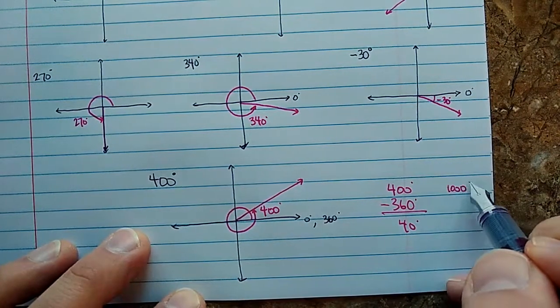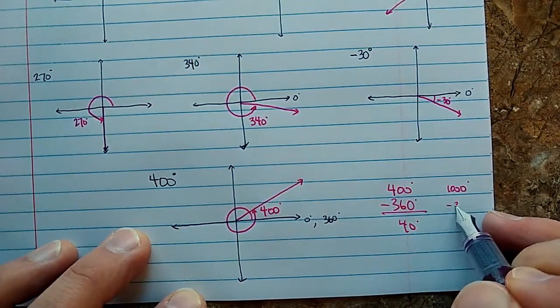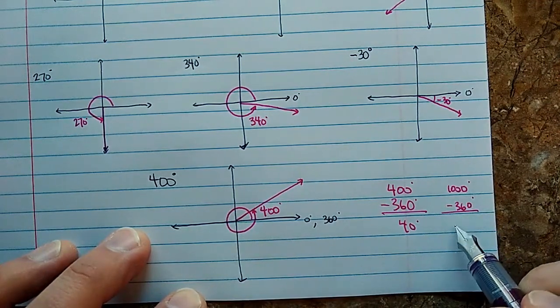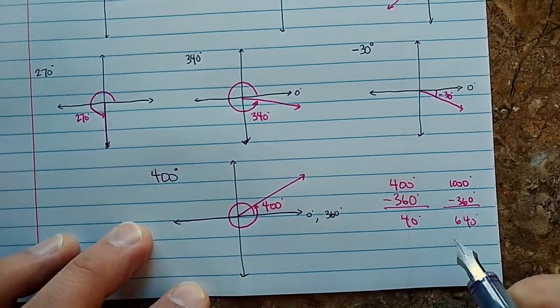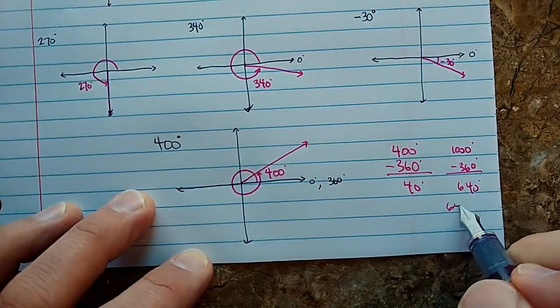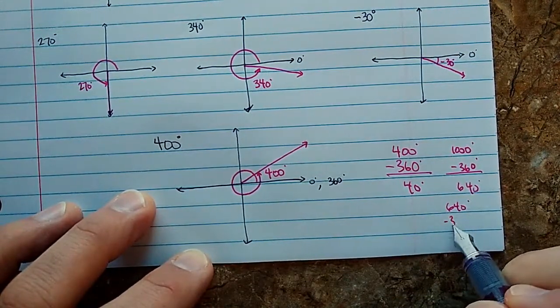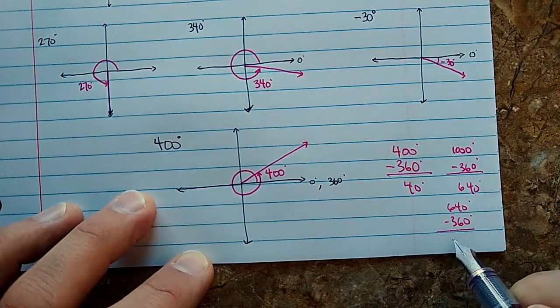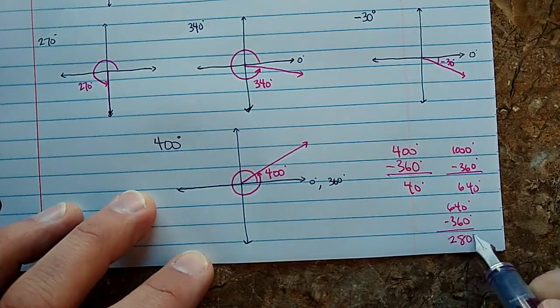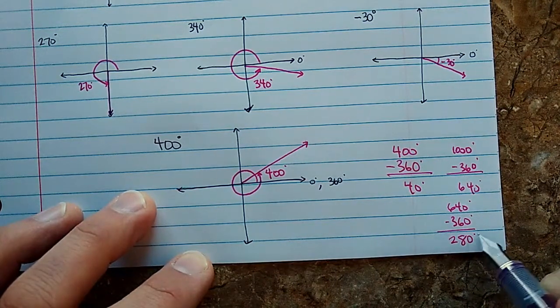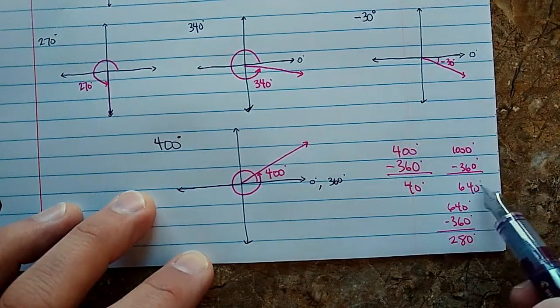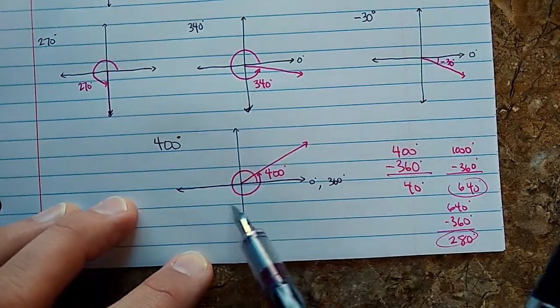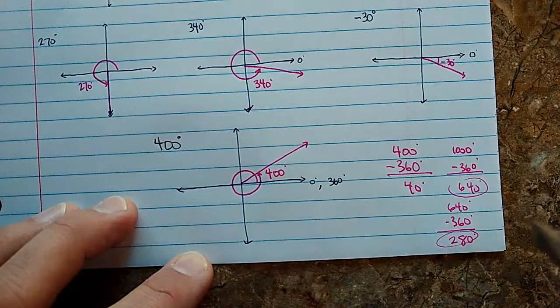If I had like a thousand and I subtract 360 degrees, let's see, that's going to be 640 degrees. Well, that's not quite enough. So if I take 640 and subtract another 360 from it. Let's see, that's going to be, what, 280 degrees? And so 1000 degrees has the same terminal arm as 640 or 280. So that would be down here. It would be down here in the fourth quadrant.